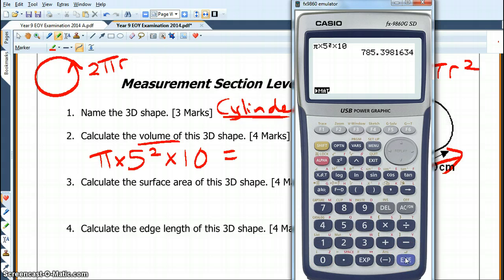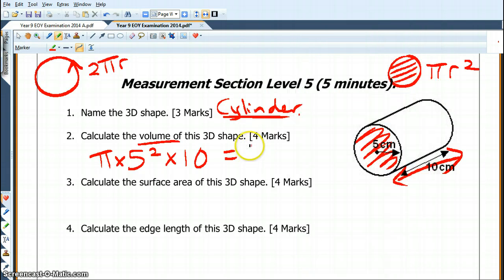And so we go shift pi times 5 squared times 10. And that is 785.4. I've just rounded it. So 785.4.